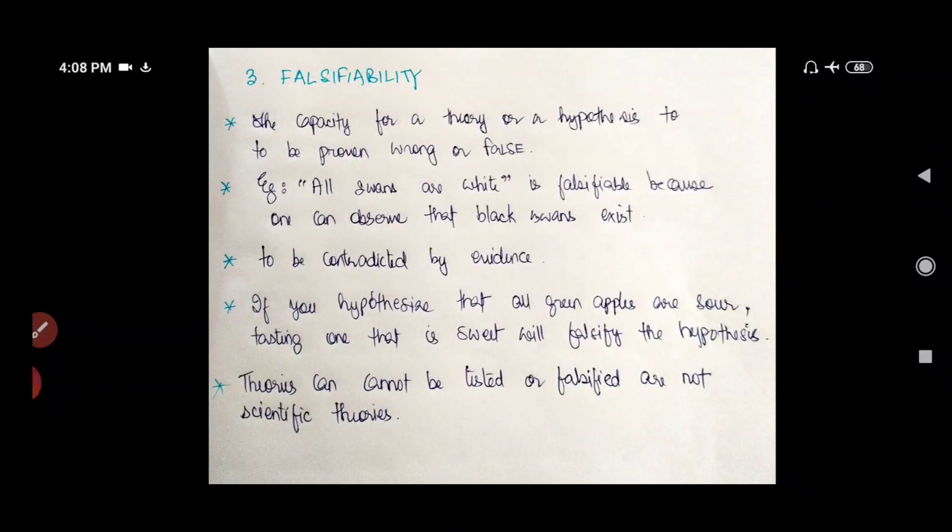And I say, hey, your theory ABCD is false. And I have evidence to support my claim that it is false. And I show you the evidence. This is called falsifiability. The capacity for a theory or a hypothesis to be proven wrong or false.